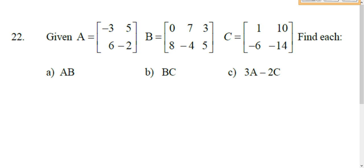So multiply matrix A times matrix B. Write it out. Write matrix A: negative 3, 5, 6, negative 2.